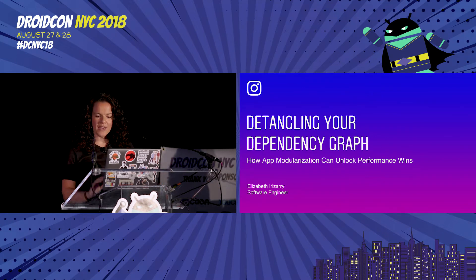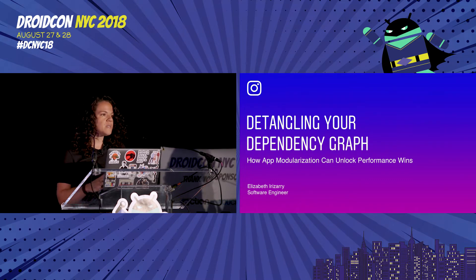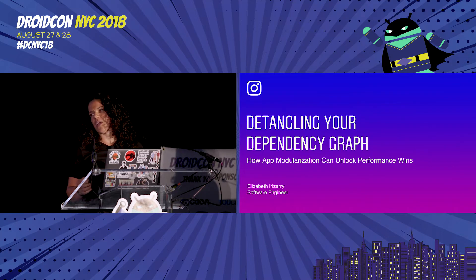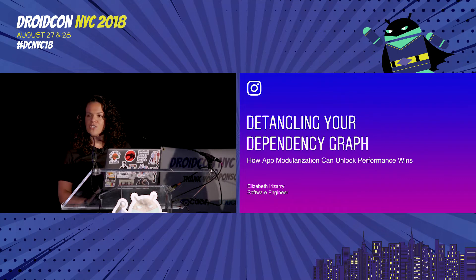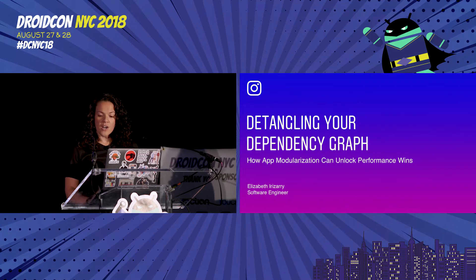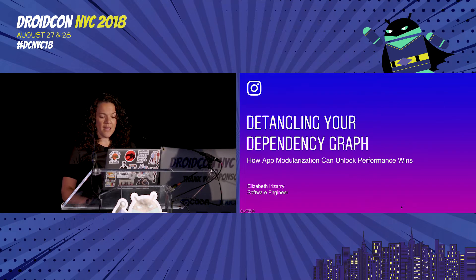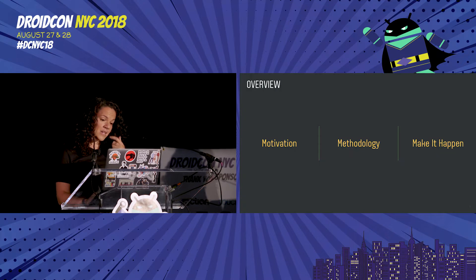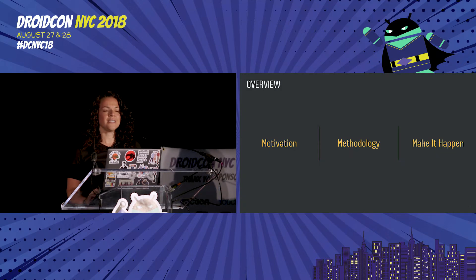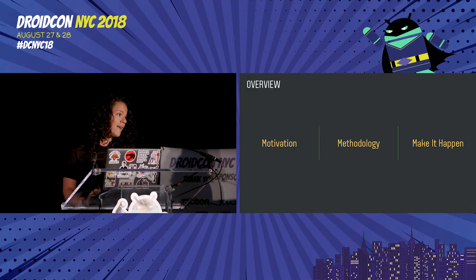I've been at Instagram for just about a year now. I'm a member of the core client performance team, and we're responsible for the speed and efficiency of the Instagram app across devices around the globe. We build infrastructure that protects and improves app-wide metrics ranging from app size, startup time, and scroll performance, to name a few. In particular, I lead our app modularization efforts for the Android code base.